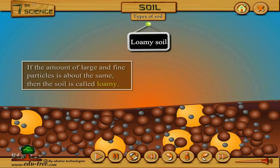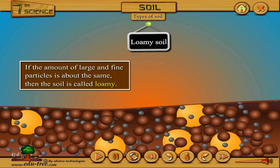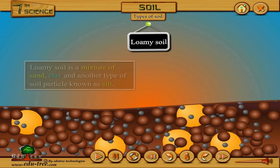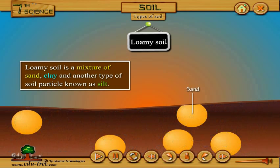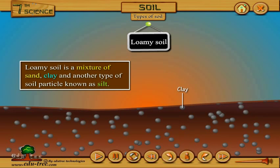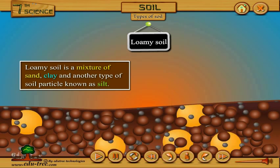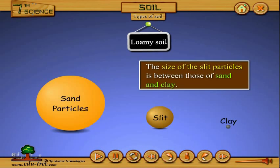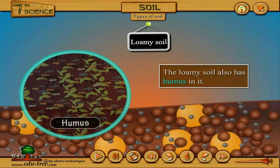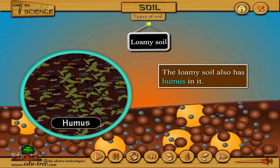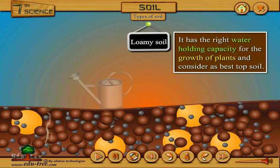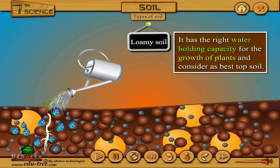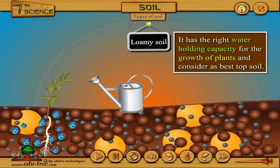Loamy Soil: if the amount of large and fine particles is about the same, then the soil is called loamy. Loamy soil is a mixture of sand, clay, and another type of soil particle known as silt. Silt occurs as a deposit in river beds. The size of the silt particles is between those of sand and clay. The loamy soil also has humus in it. It has the right water holding capacity for the growth of plants and is considered the best topsoil.